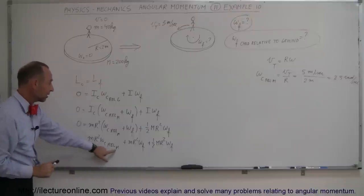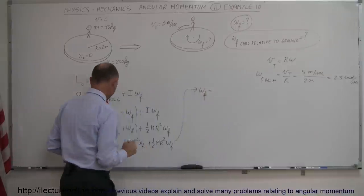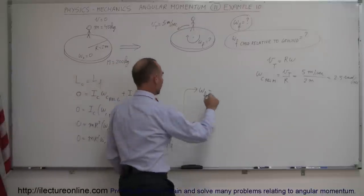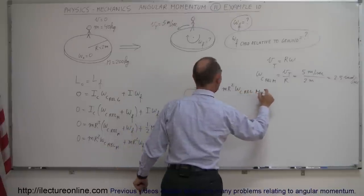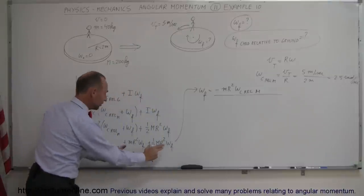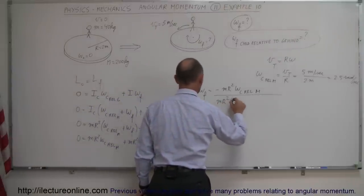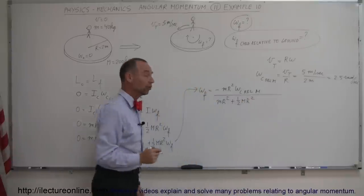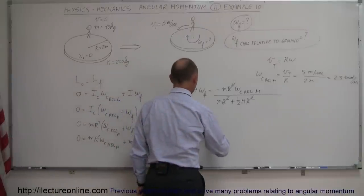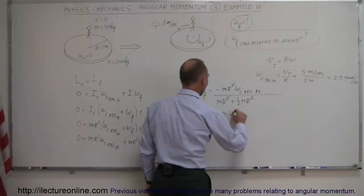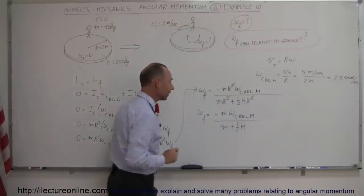Solving for omega final: move the child's term to the other side, giving minus m·r²·ω_child/mgr. Factor out omega final from the remaining terms to get m·r² + ½M·r² in the denominator. The r² cancels from numerator and denominator, leaving: ω_final = −m·ω_child/mgr divided by (m + ½M). Now I'm ready to plug in the numbers.